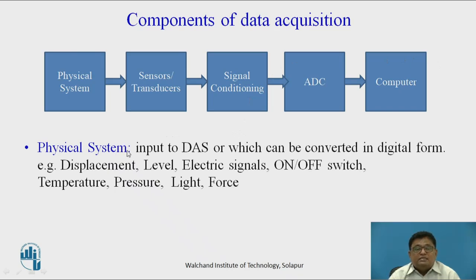The physical system is actually the input to the data acquisition system — the quantity which needs to be converted into digital form. From the physical system, it may be a temperature, pressure, humidity, or displacement, and so on.